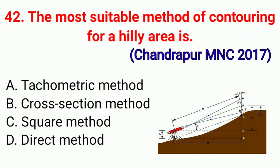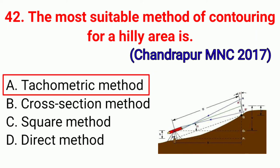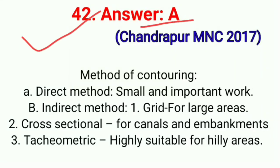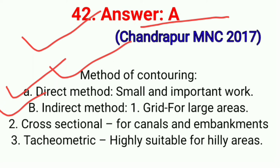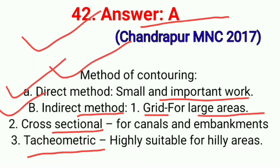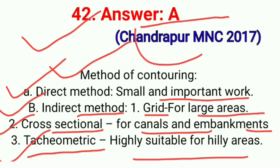Question No. 42. The most suitable method of contouring for a hilly area is — correct option A: Tachometric method. Methods of contouring: direct method — used for small and important work; indirect method — three types: first, grid method for large areas; second, cross-sectional method for canals and embankments; third, tachometric method — highly suitable for hilly areas. Correct option A.